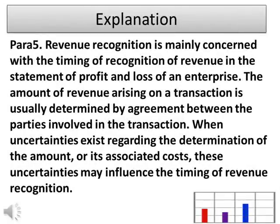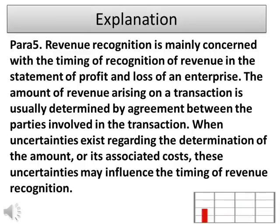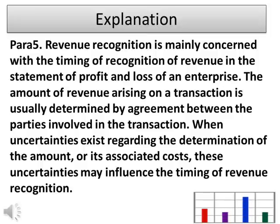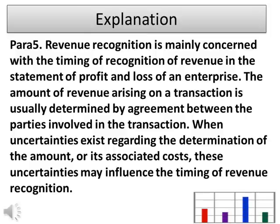Explanation — Para 5: Revenue recognition is mainly concerned with the timing of recognition of revenue in the statement of profit and loss of an enterprise. The amount of revenue arising on a transaction is usually determined by agreement between the parties involved in the transaction. When uncertainties exist regarding the determination of the amount or its associated costs, these uncertainties may influence the timing of revenue recognition.